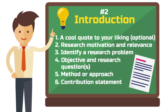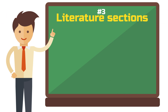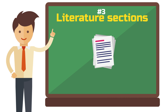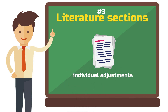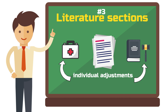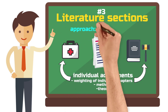Now that we have clarified the structure of your introduction, let's move on to Step 3: Literature Sections. Every discipline works a little differently; however, they all overlap in the structure of their research articles, which is why all papers can be structured in a similar way. You must make individual adjustments for your field of study, such as the weighting of individual chapters. Since the scope of a student paper generally does not require empirical research, the approach is most often literature-based.